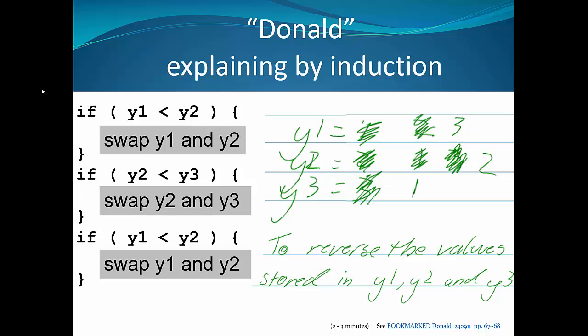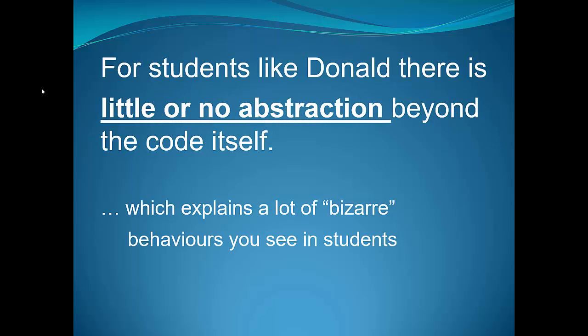But some students offer up that sort of explanation. For students like Donald, there is little or no abstraction beyond the code itself. They need to think about code in terms of concrete values. They might go on to learn to reason about code in an abstract way, but at this stage of their development they can only think about code in terms of concrete values. If you've puzzled over some of the bizarre behaviors you see in your students, this explains it.